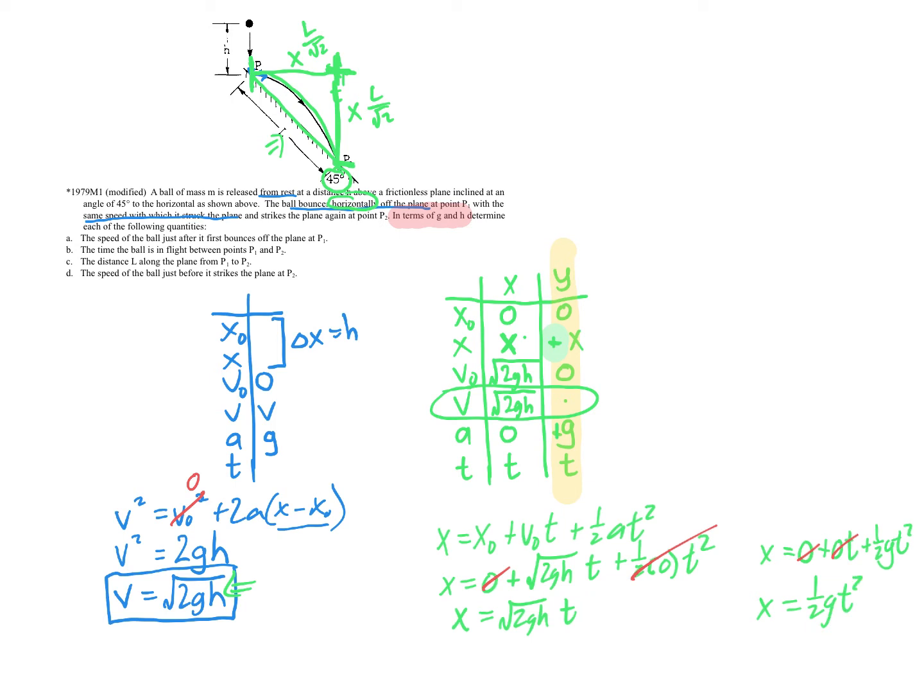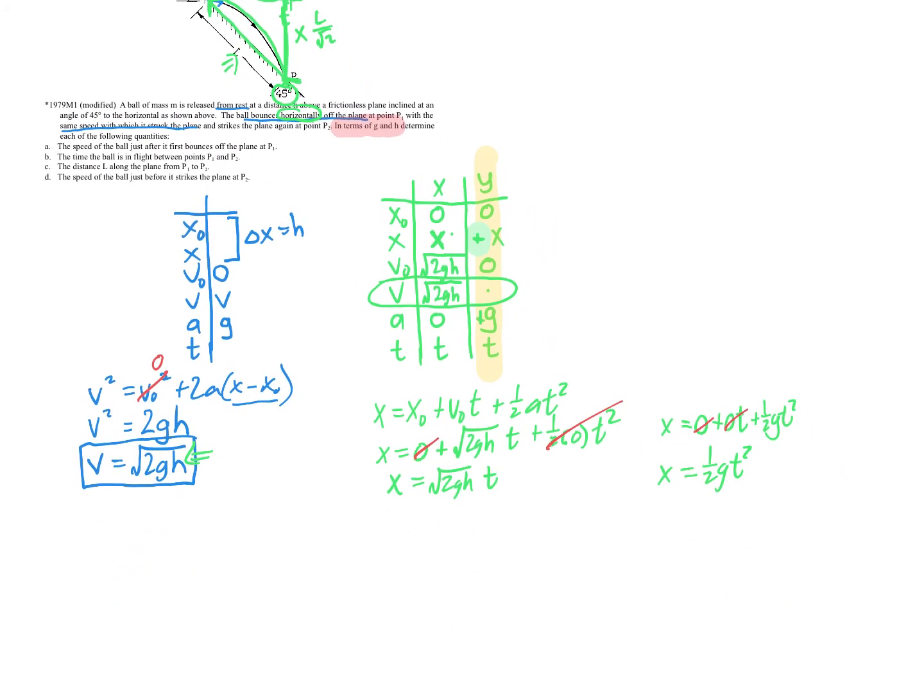We'll do a similar thing for the vertical there. For the vertical, we're going to say X equals the initial position plus the initial velocity, which was 0 times T, plus 1 half GT squared. And again, we've got some 0s that are going to cancel out. And so we essentially have that for horizontal, that distance is square root of 2GH times T. And for the vertical, X equals 1 half GT squared. Now, as we said before, because this is 45, 45, 90, those two distances, the horizontal distance and the vertical distance, have to be equal. And so we can actually set those two things equal to each other.